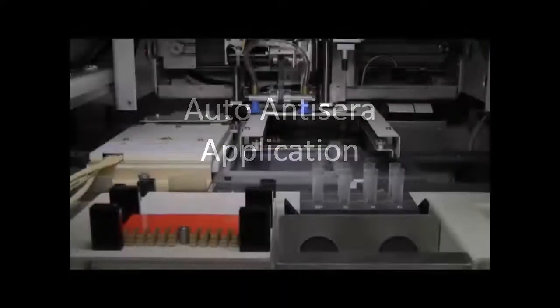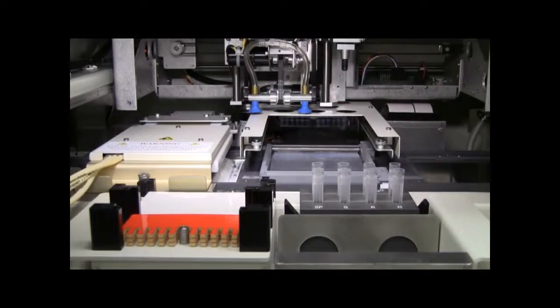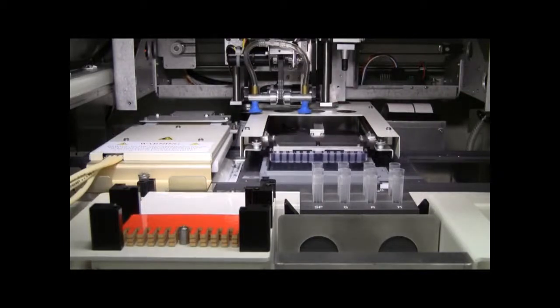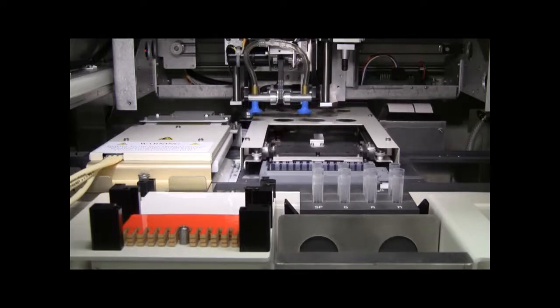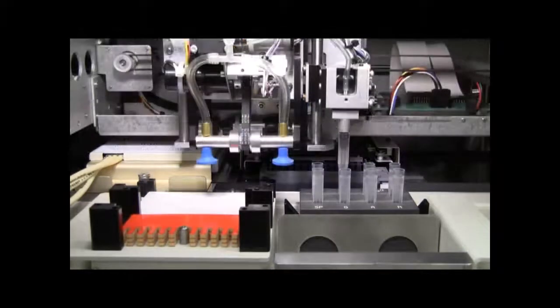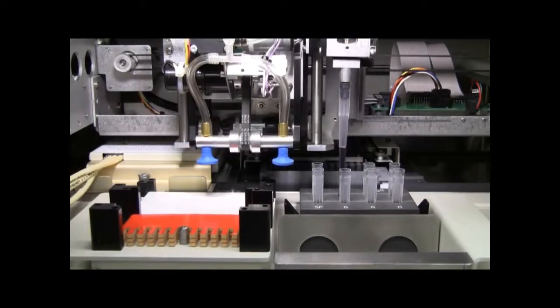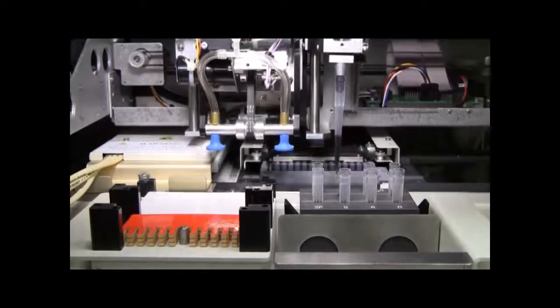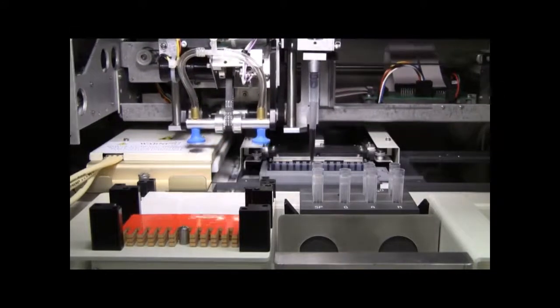After electrophoresis, the agarose gel is moved into the anti-sera application station. Once it's in the station, an anti-sera template is moved over the agarose gel and lowered onto the gel. Afterwards, a pipetter automatically picks up the correct anti-sera and loads it onto the anti-sera template for anti-sera application onto the agarose gel.